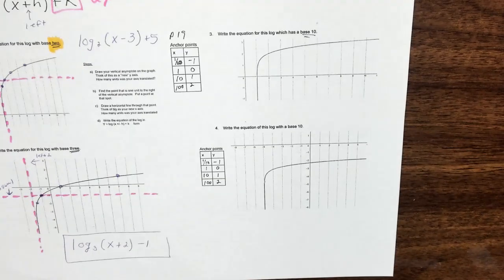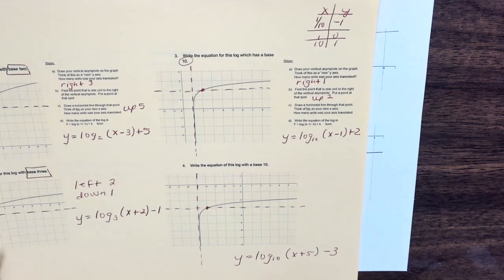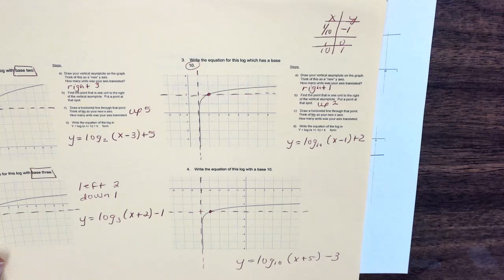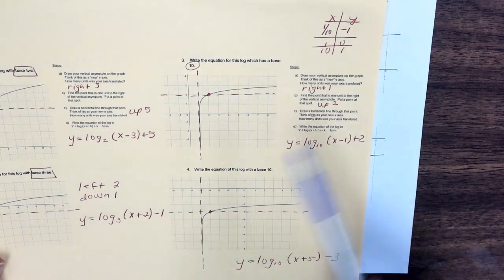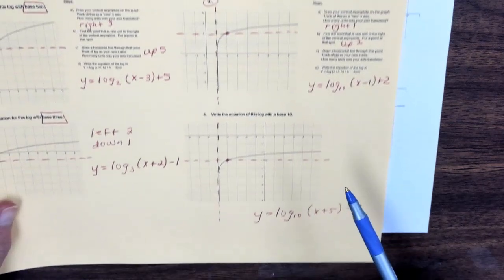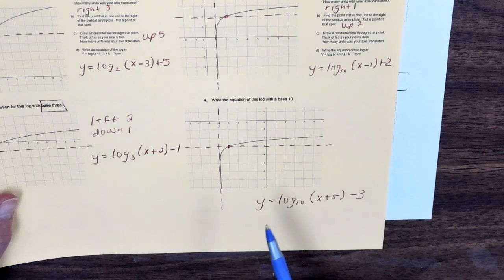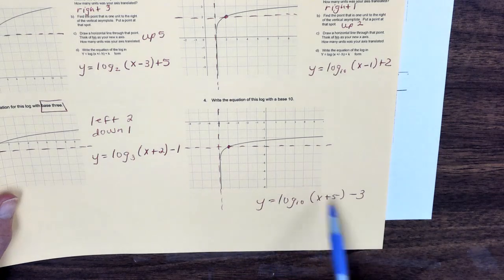Now that you've got the hang of it, let me show you the answers we came up with. Here in my new picture I moved my axes — I went to the right 1 and up 2. And here I went left and down.